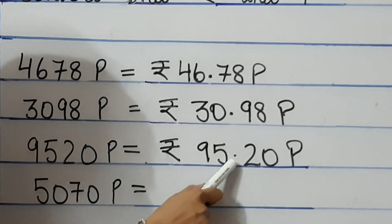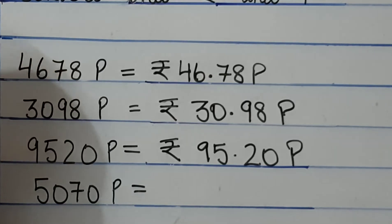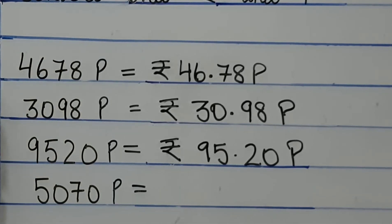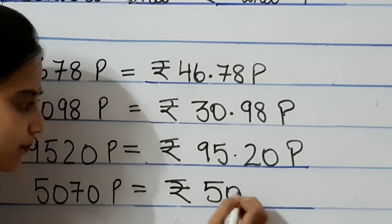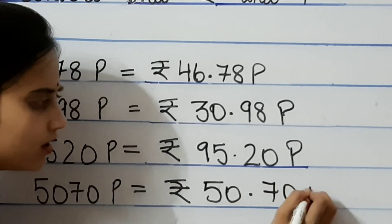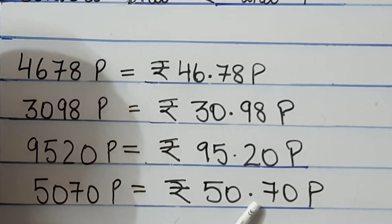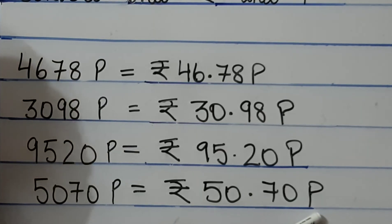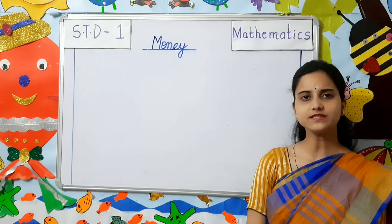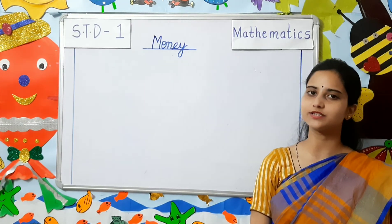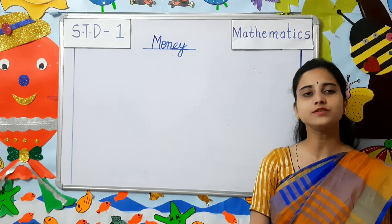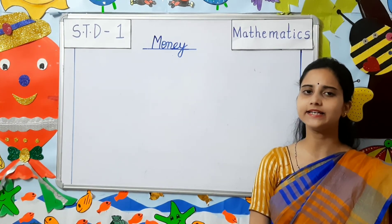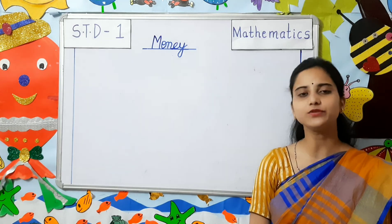Next, 5070 paise — we write rupees 50.70 paise. The decimal sign separates the rupees from paise. Students, I hope you understood whatever I taught you today. Worksheets related to these topics will be uploaded on your school website. Kindly go through them and study properly. Thank you students.